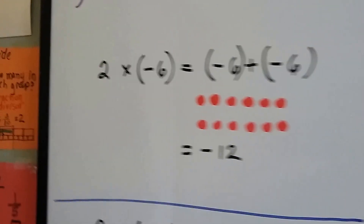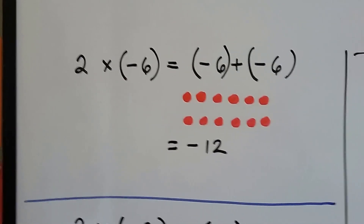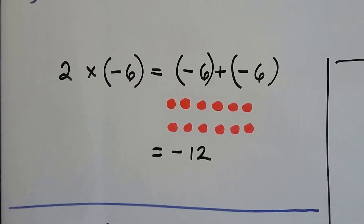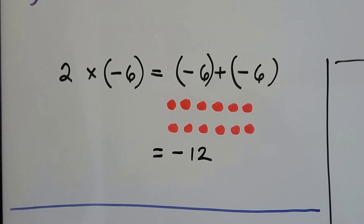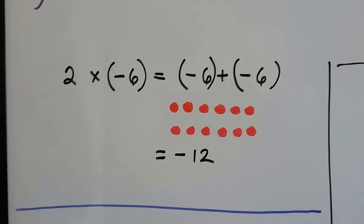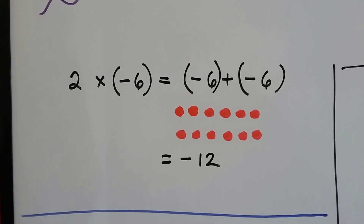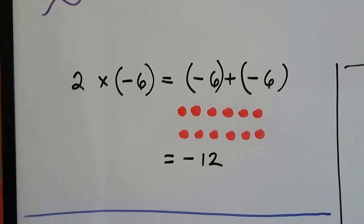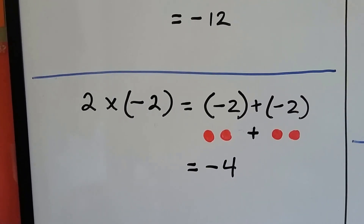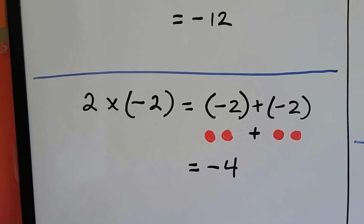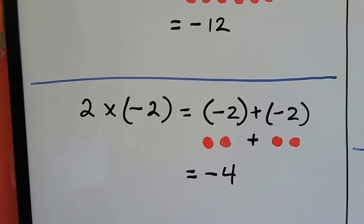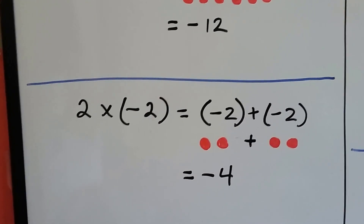Alright, look at this one. We've got 2 times negative 6. What that means is negative 6 plus negative 6 — it means we have two negative 6s. So it's going to be a negative 12. If we've got 2 times negative 2, it's the same thing as saying we have a negative 2 and a negative 2. We've got two of them, so that makes negative 4.